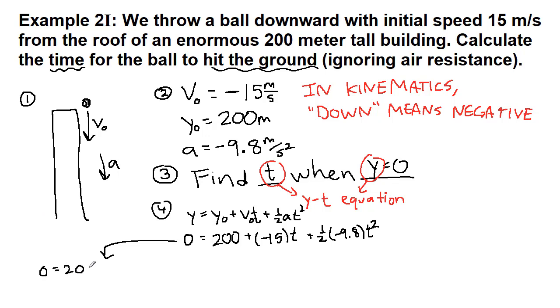Okay. Zero equals 200 minus 15t minus 4.9t squared. All I've done is just clean up the problem a little bit, get rid of some of the parentheses, multiply these two numbers together, and we see that we've got a quadratic formula situation. With this quadratic formula situation, when we're looking for a, b, c in the quadratic formula, so this is the quadratic formula, a is the thing attached to t squared. That's the negative 4.9. b is the thing attached to t. That's the negative 15. And c is the thing that's all by itself, but still on the same side as all of the other numbers. Positive 200.